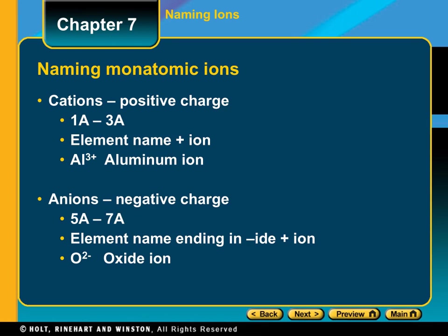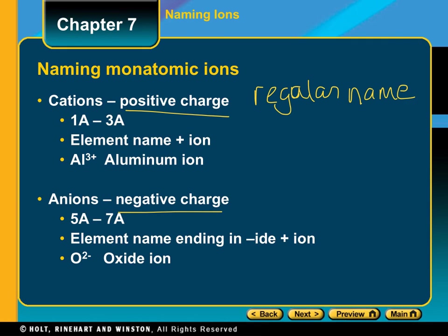Depending on whether you have a positive charge or a negative charge is how you name the ion. When you have a positive charge, cations just use the regular name and then add the word ion after it. For instance, you have aluminum ion. If you were looking at Ca plus two, this would be calcium ion.